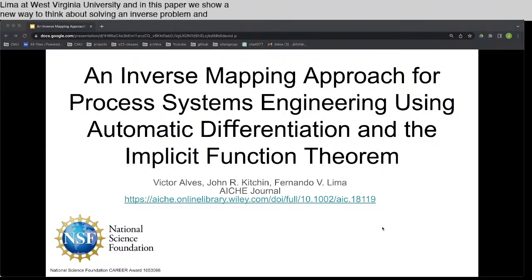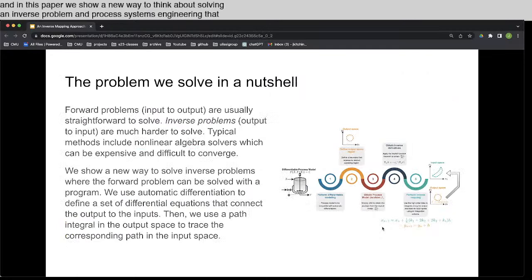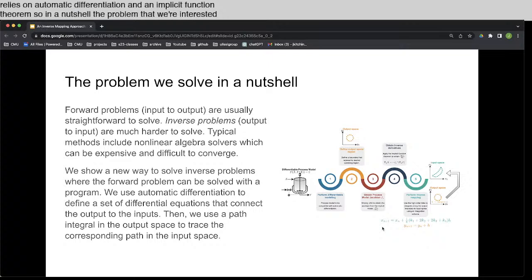So in a nutshell, the problem that we're interested in solving is lots of times we have a forward model that you put in some inputs, some variables, some reaction conditions, and then we have mass balances, energy balances, other kinds of equations that relate it to the output of a process. But a lot of times we really want to know, if we want a desired solution in the output space, what's the corresponding inputs that give us that? That's called an inverse problem.